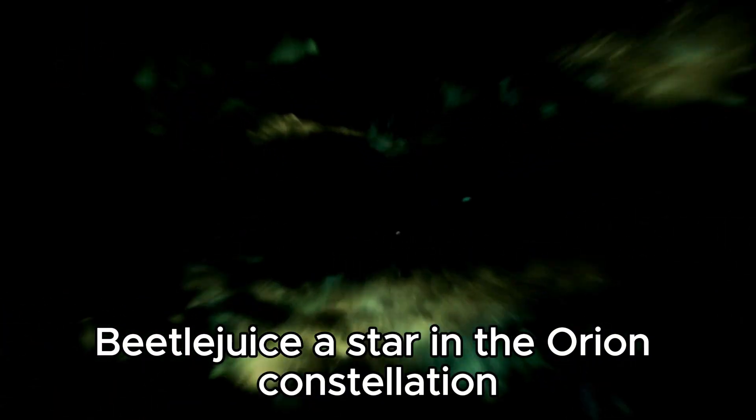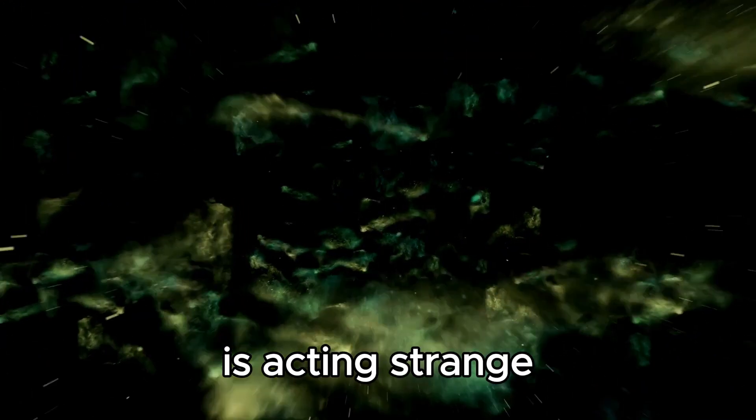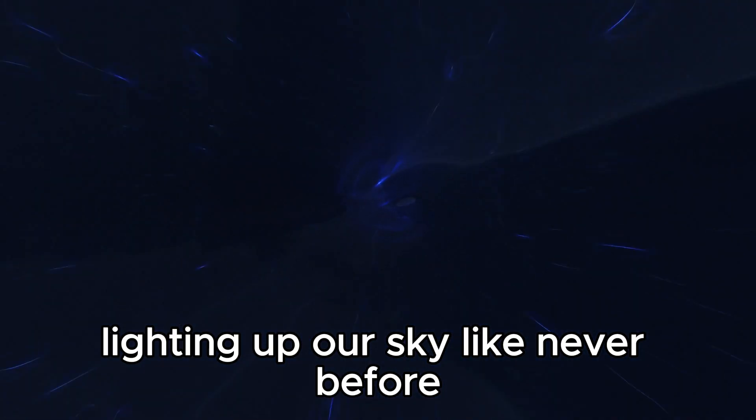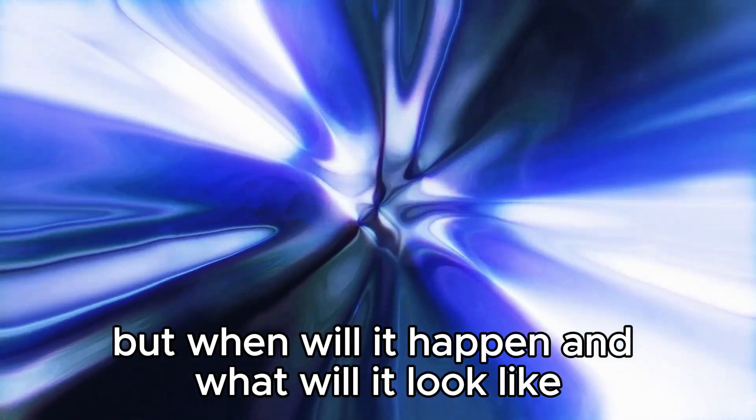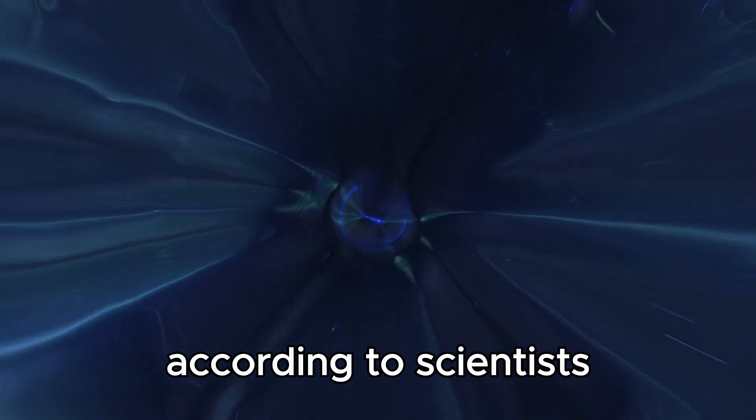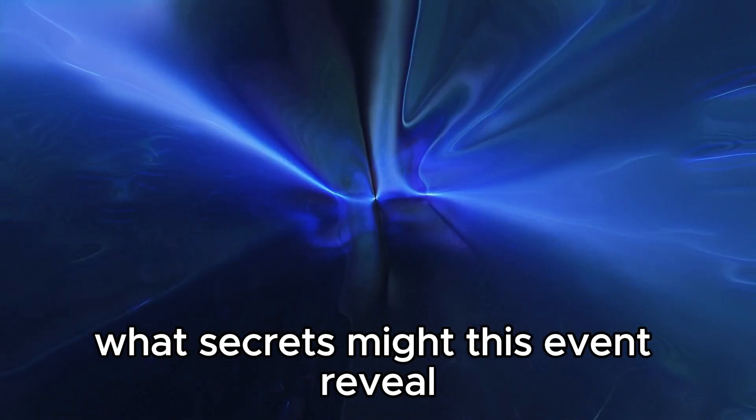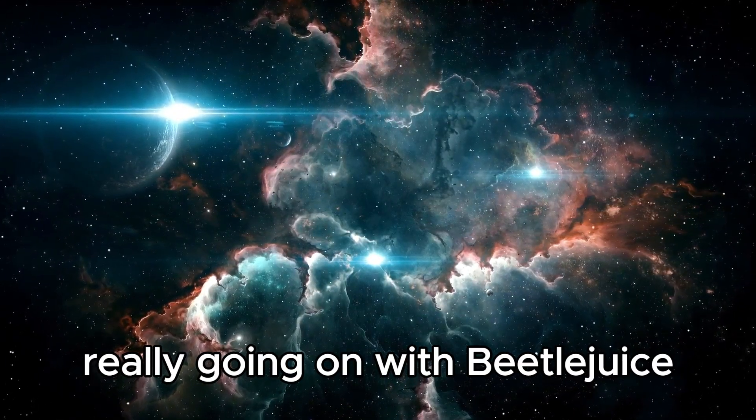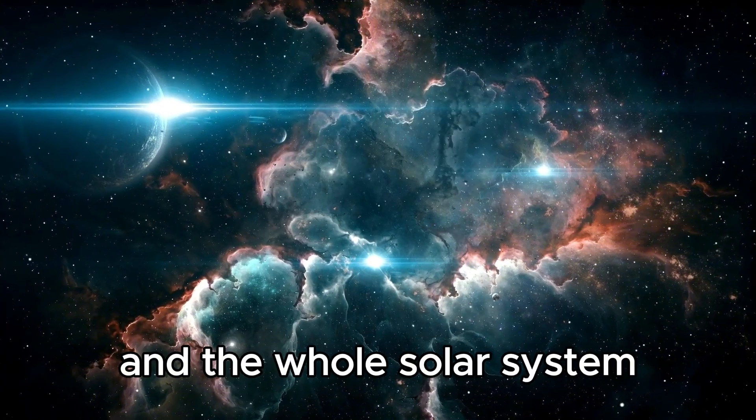Betelgeuse, a star in the Orion constellation, is acting strange, suggesting it might explode into a supernova, lighting up our sky like never before. But when will it happen and what will it look like according to scientists? What secrets might this event reveal? Let's dive deep into what's really going on with Betelgeuse and how it might affect Earth and the whole solar system.